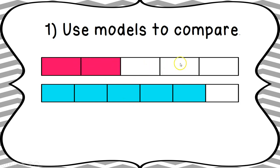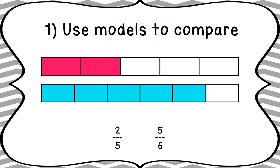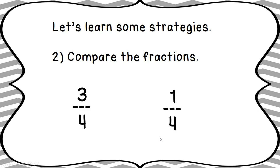Here's another example using models. The first fraction has five pieces and two are shaded, so that's two-fifths. Down below we have six pieces and five of them are shaded, so that fraction is five-sixths. Looking at the model, five-sixths is way more than two-fifths, so we put the less than sign: two-fifths is less than five-sixths.